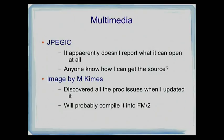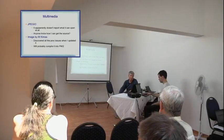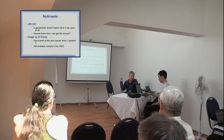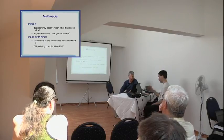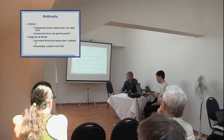I'd like to get the JPEG.IO source to see if I can fix the one issue where it doesn't report what it does. I discovered all of these issues because I was reworking ImageEXE, an old file of Mark Kimes, which I was going to plug into FM2 as a module for quick picture viewing. As a result of playing around with it, that's how I found out about all these other broken things.